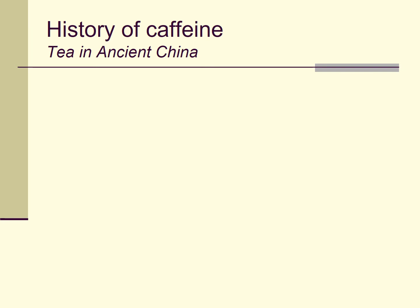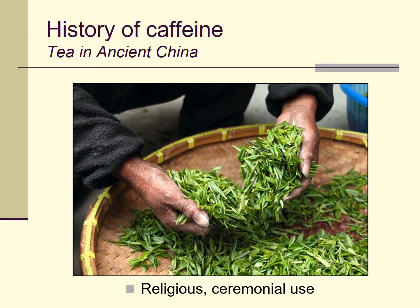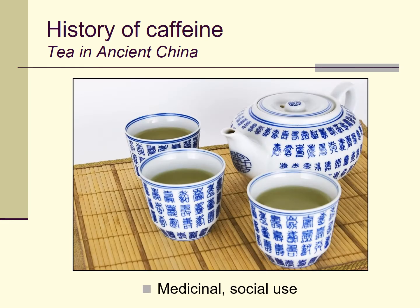For many hundreds of years in China, the use of tea was fairly restricted to ceremonial and religious purposes, in part because it was fairly difficult to cultivate successfully in large amounts and to process into a form that would be pleasant to drink. Over time, agricultural techniques became more sophisticated, more tea could be produced, the price of tea within China came down, tea was used by more and more people, and it began to have medicinal and social uses.